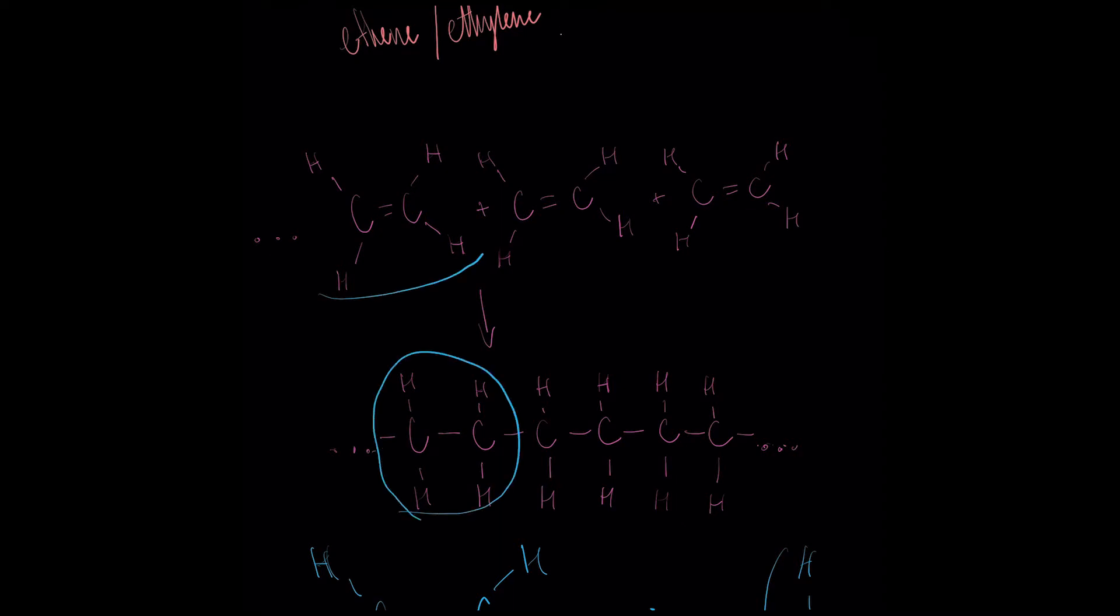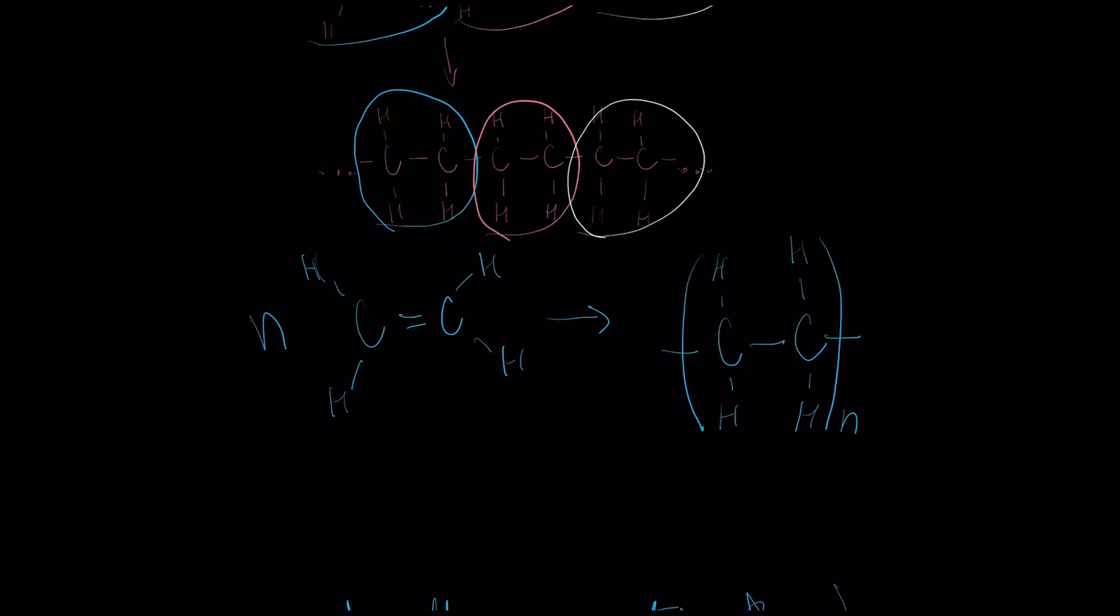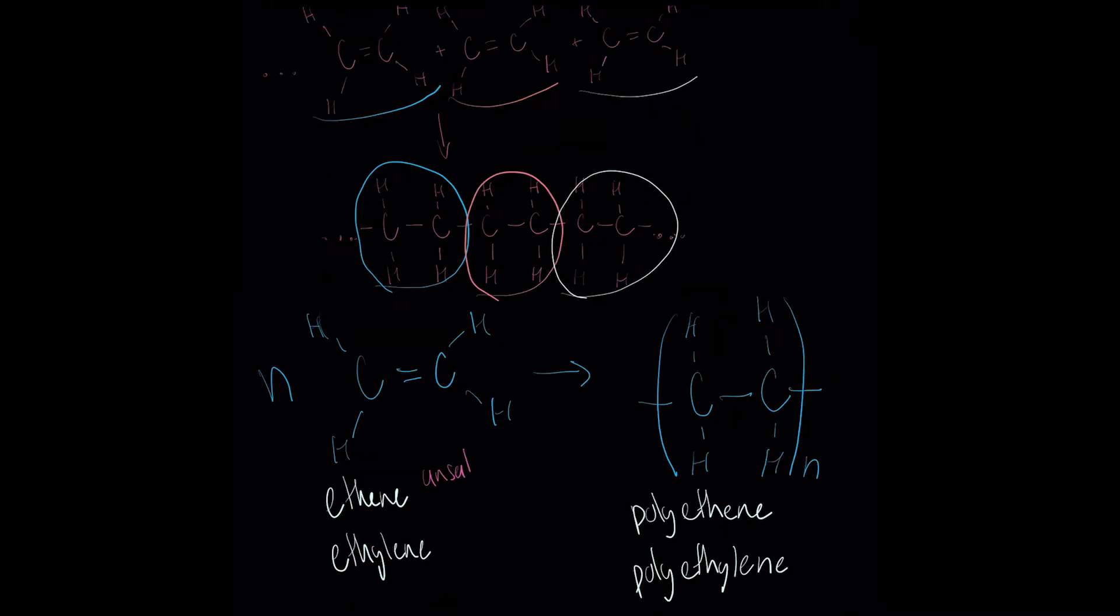This chain reaction is the polymerization process and creates chains of ethene molecules that are thousands of units long. We usually represent polymers with this bracket notation where n tells you how many units make up your chain. We won't go into too much more detail on this chemical reaction in this video but if you'd like to know more there are plenty of extra resources linked in the description.